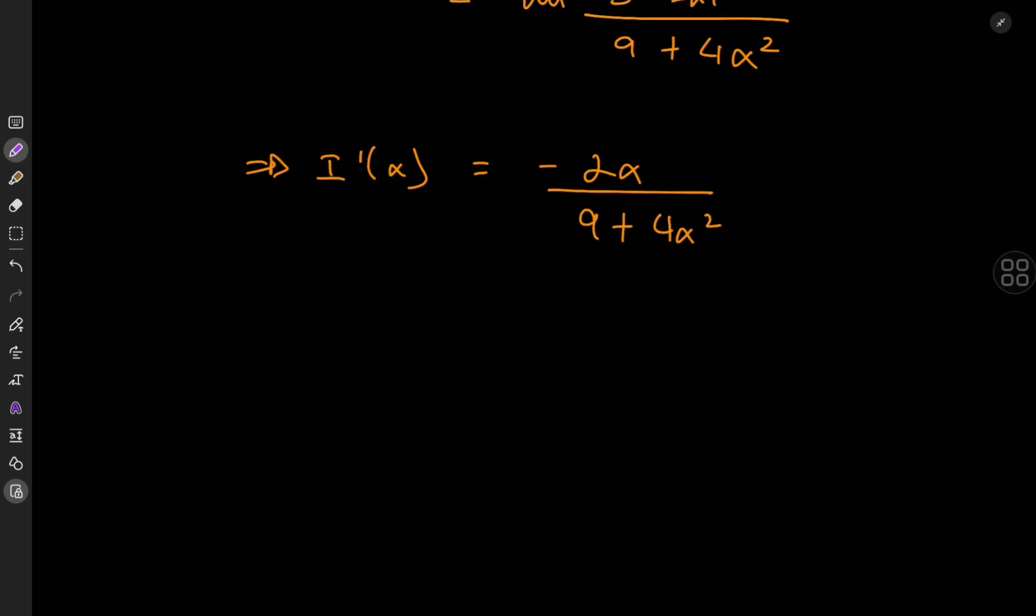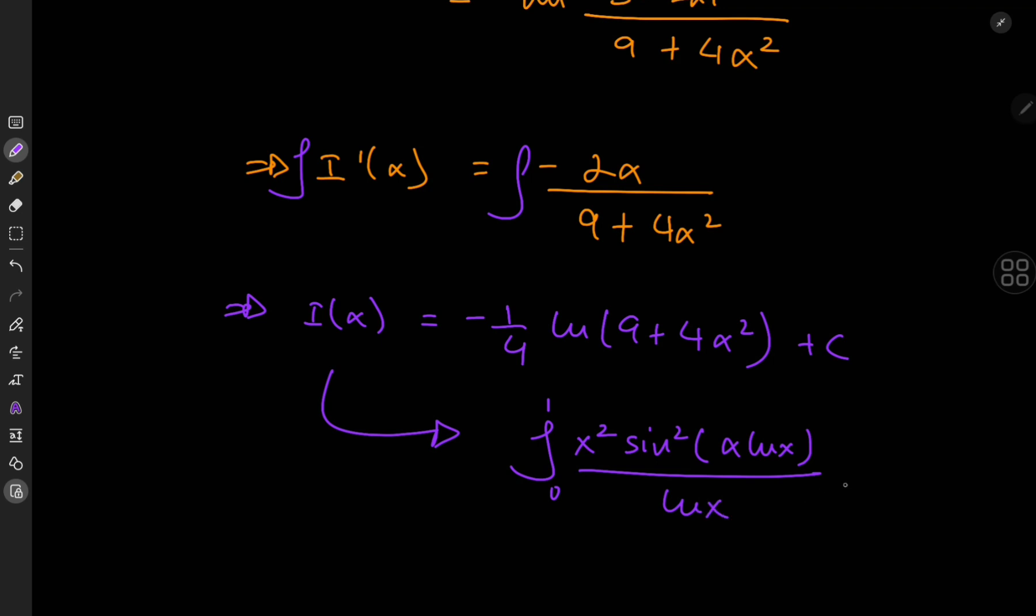So now that we have the derivative completely in terms of the parameter alpha, we can recover the integral function by integrating with respect to alpha. So this implies that we have i of alpha equal to the antiderivative should be 1 fourth of log 9 plus 4 alpha squared plus c. Yeah, that's about right. With a negative sign, of course. And for the constant of integration, let's recall exactly what i of alpha was. This was the integral from 0 to 1 of x squared times the squared sine of alpha times log x divided by log x dx.